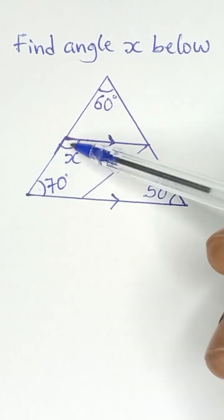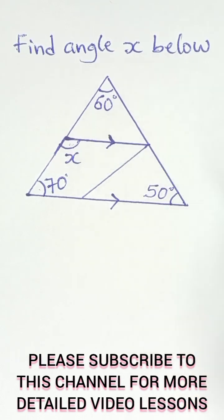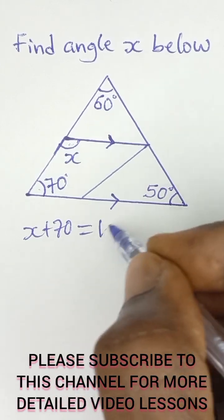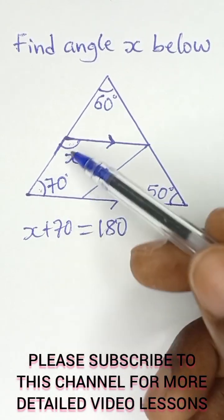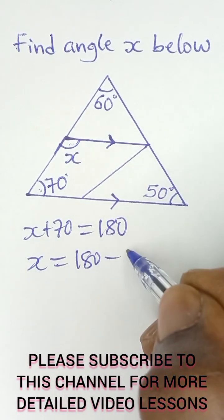are within the parallel lines. So angles like these are co-interior angles and they add up to 180 degrees. Co-interior angles like this add up to 180. So from there we can say x is equal to 180 minus